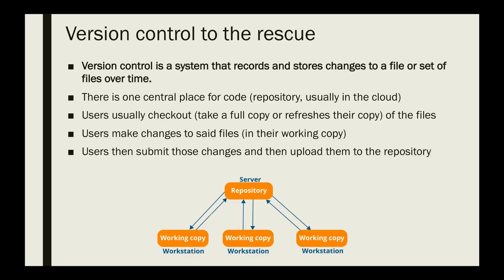Version control systems as a concept is a system that records changes to a file or set of files over time. As your code base changes, the history of the code base grows. In centralized version control systems there is usually one point where the true version of the code exists — perhaps in a server somewhere in the cloud. Client machines, users or developers connect to that machine, check out copies of the code, make changes to it, and then send it back to the machine. Those are centralized version control systems.